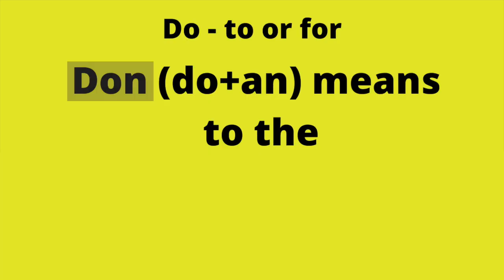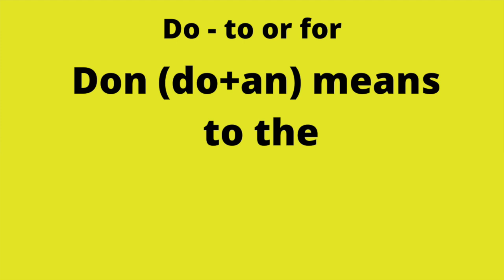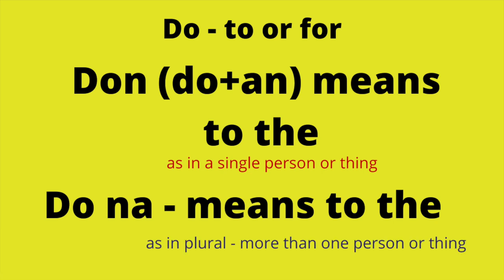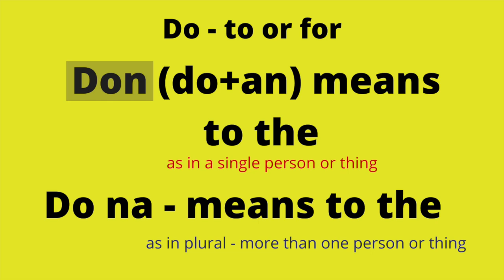It's also good to be aware of these words which are all part of the 'do' family. 'Don' is basically 'do' plus 'an' coming together. It's better to say 'don' rather than 'do an' — again it makes a smoother speech pattern. 'Don' means 'to the' in terms of a singular person or thing. 'Do na' means 'to the' as in plural or more than one person or thing. So 'do na' is used for multiple people or things, and 'don' is used for a single person or thing.